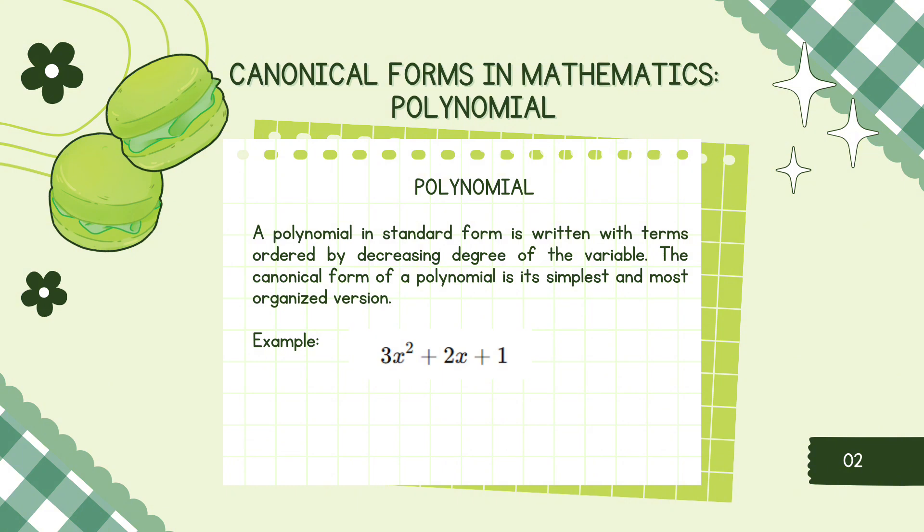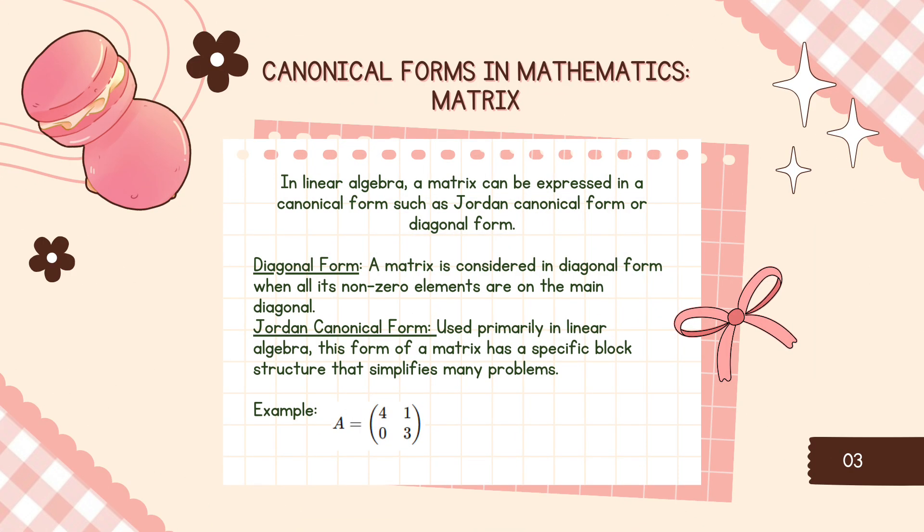Here are some common uses of canonical forms. First is canonical forms in mathematics, for example, polynomial. A polynomial in standard form is written with terms ordered by decreasing degree of the variable. The canonical form is its simplest and most organized version. Example: 3x squared plus 2x plus 1.